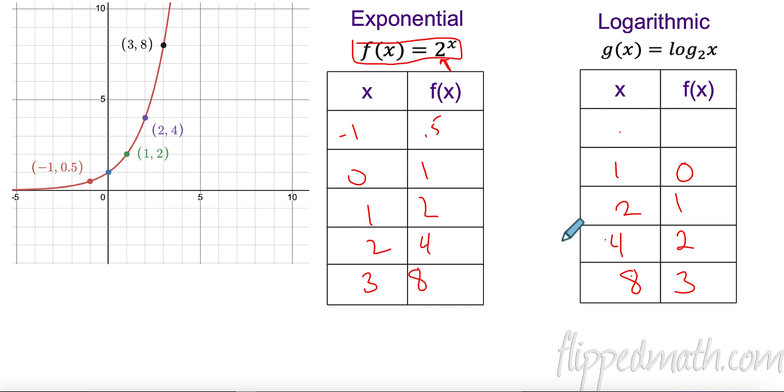So I'm missing one. Let's see if we can get a pattern here. 3, 8, 8, 3, 2, 4, 4, 2, 1, 2, 2. Ah, they're just backwards, right? So this is going to be 0.5 or 1 half and negative 1. So now we can kind of plot these. I have 1 half and negative 1. I have 1 and 0. I have 2 and 1. I have 4 and 2. And I have 8 all the way down here and 3. And if I'm really good, I can draw this logarithmic graph. Of course, I'm not really, really good at it, but you get the point.